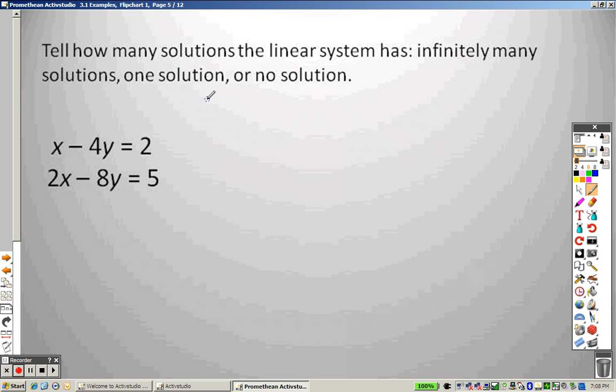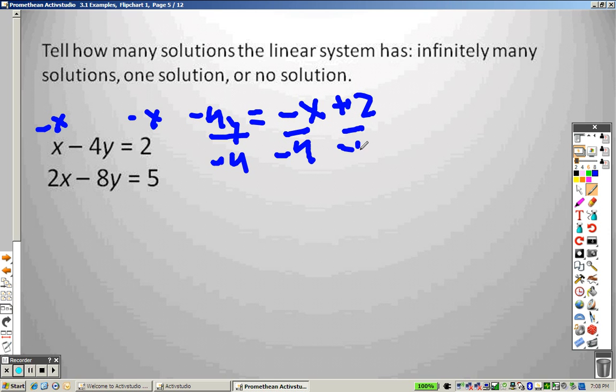This one, tell how many solutions there are. Well, very simply put, here's how you can do it. Solve for y. So, to do that, I would minus x on to both sides, so I get negative 4y equals negative x plus 2. I would divide by negative 4, which means I divide everything by negative 4.